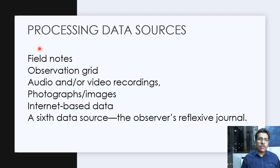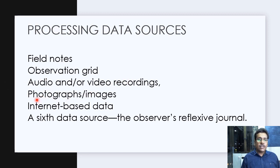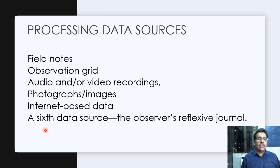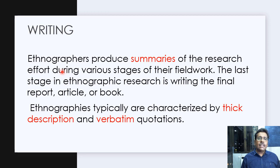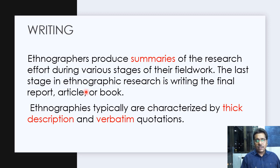Data sources include field notes, observation grids, audio and video recordings, photographs, photo archival images, internet-based data about the particular group, and the researcher's own reflexive journal. These are the sources used to write the ethnographic report. The writing part is a summary of the research effort during various stages of fieldwork. Ethnographic reports are typically characterized by thick description, and as with all qualitative research, ethnographic research deals with lots of descriptions and verbatim quotations.